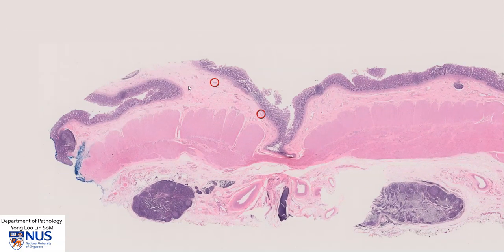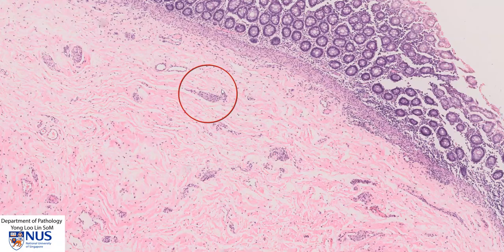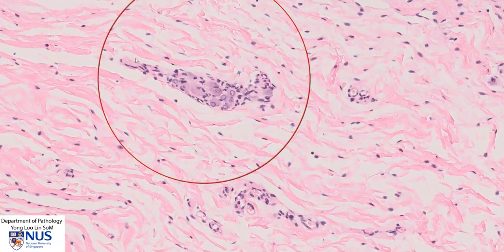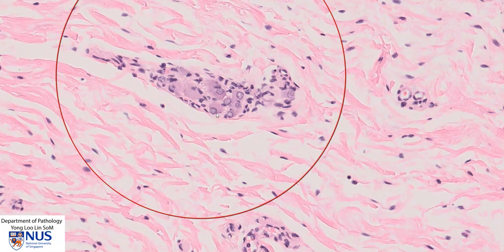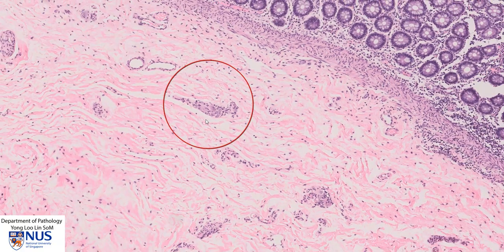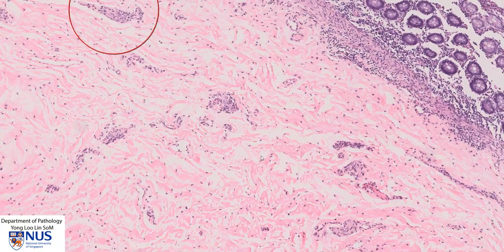Let's first look at the normal proximal segment and focus on the submucosal nerve plexus. We can see here a small nerve twig with some of these larger polygonal cells. These cells have eccentric, very round, large nuclei, and some of the nuclei contain a small but prominent nucleolus. These cells also have very abundant amphophilic cytoplasm — amphophilic means somewhere between pink and blue, so a little bit pale purplish. These are what ganglion cells look like, and we would expect to see them in both the submucosal as well as the myenteric nerve plexuses.